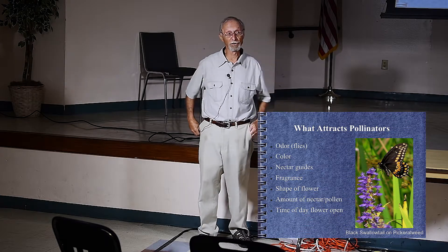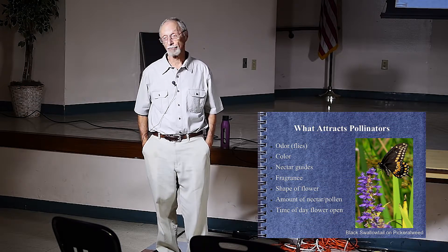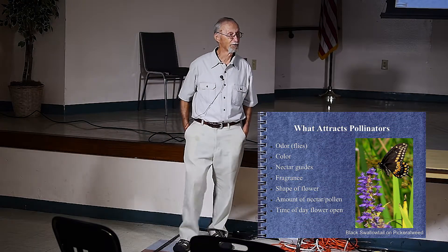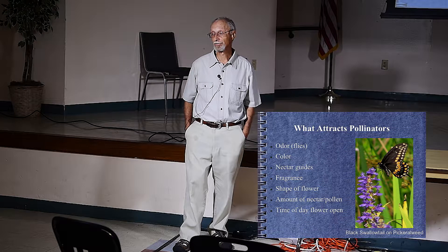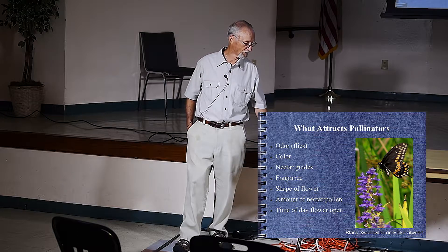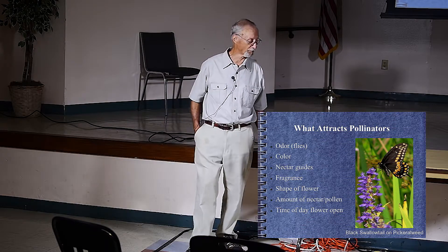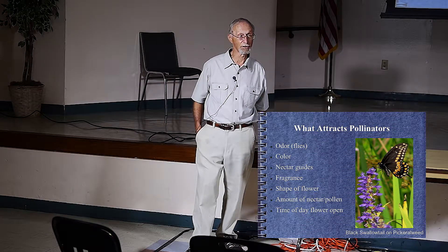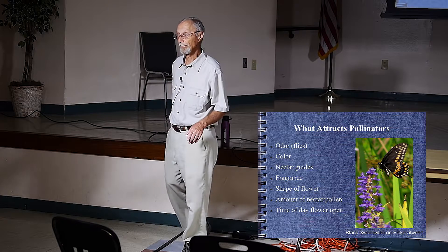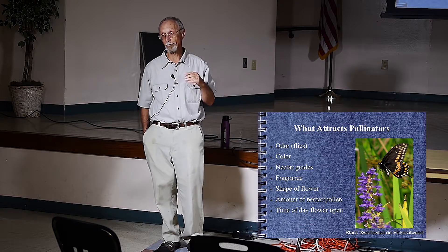The shape of the flower matters — tubular flowers, for example, attract hummingbirds especially. The amount of nectar or pollen in the flower is also an attractant; if a flower has a lot of nectar or pollen, it becomes a target for pollinators. The time of day the flower opens matters too — most pollinators are very active in the morning and activity tapers off as the day wears on.